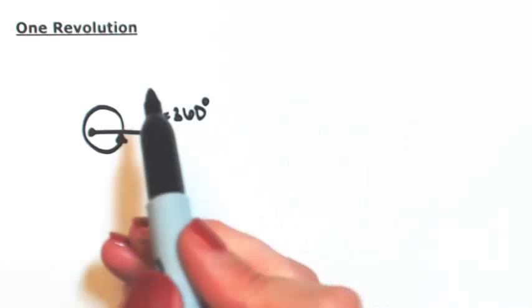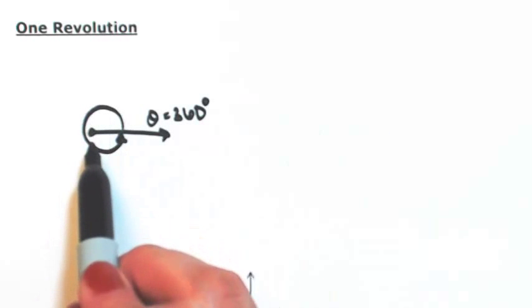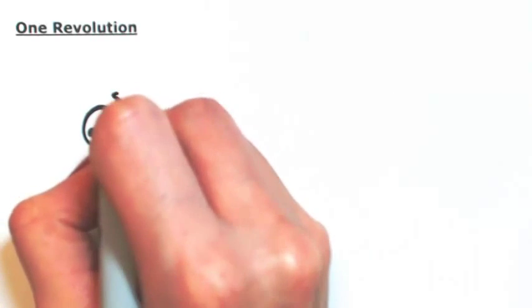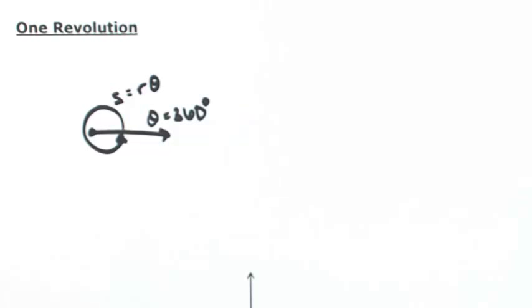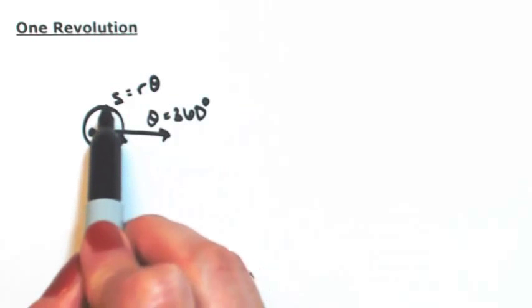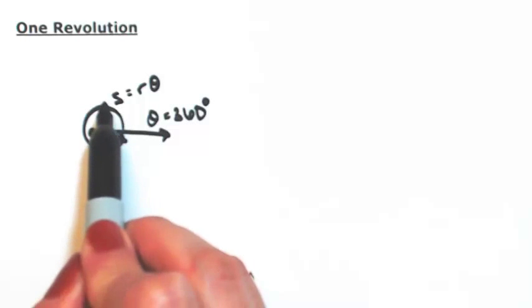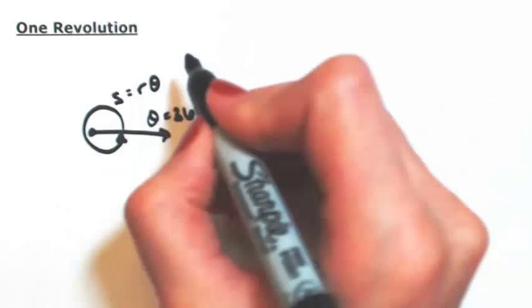Now what I want to focus on just for a moment is the arc length that was traveled around that circle. We've called that S before. So this arc length is equal to R times theta. Now since we went all the way around the circle, we could also equate this back to the circumference of the circle.